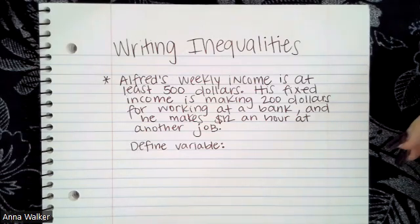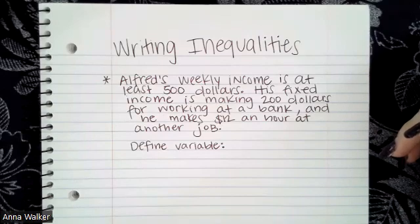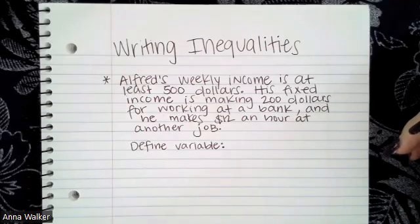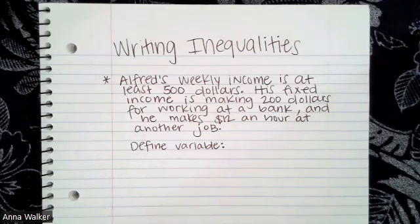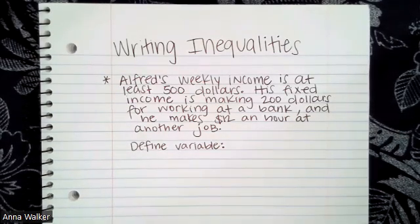So here's our first scenario. Alfred's weekly income is at least $500. His fixed income is making $200 for working at a bank, and he makes $12 an hour at another job. So go ahead and pause and write down this scenario.